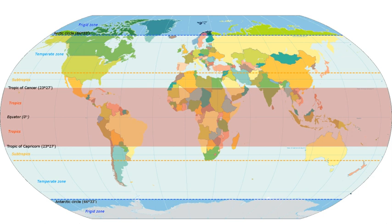The north temperate zone extends to the Arctic Circle, and the south temperate zone extends to the Antarctic Circle at approximately 66.5 degrees south. In some climate classifications, the temperate zone is often divided into several smaller climate zones based on monthly temperatures, the coldest month, and rainfall. These include humid subtropical climate, Mediterranean climate, oceanic, and continental climate.